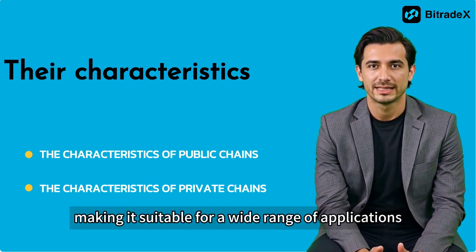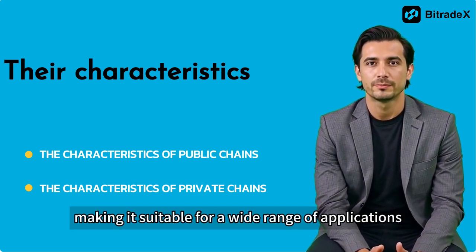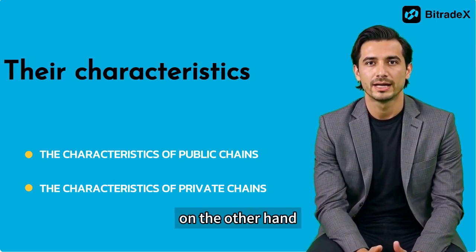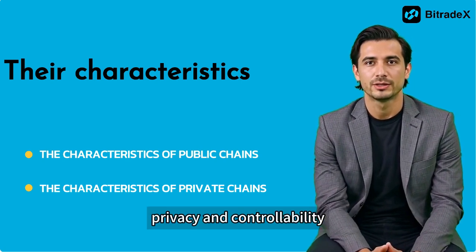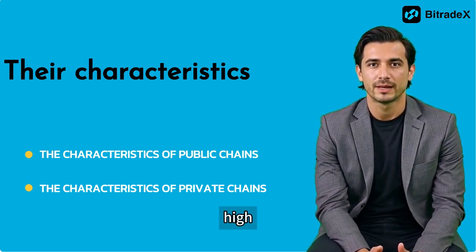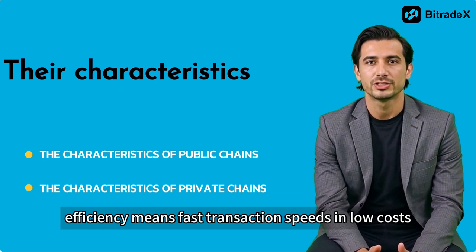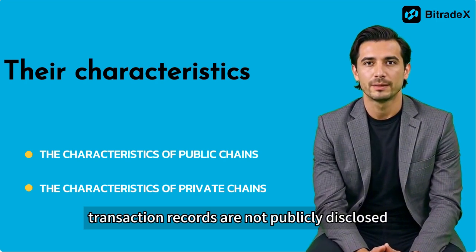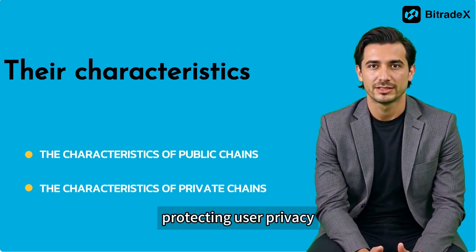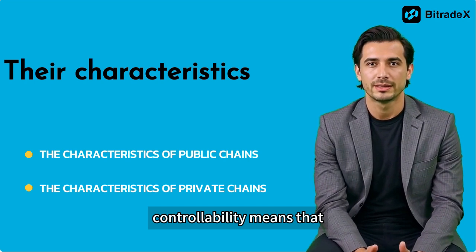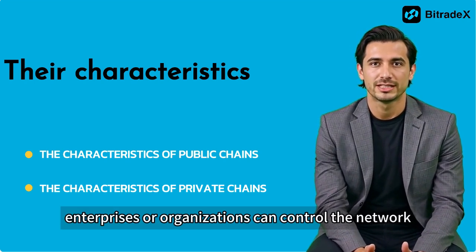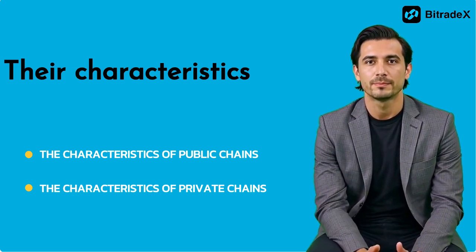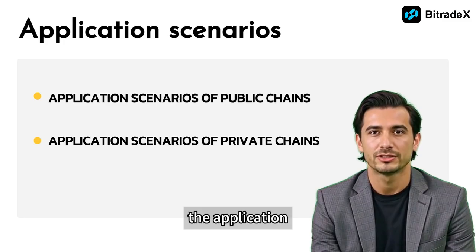Openness means that anyone can participate, making it suitable for a wide range of applications. The characteristics of a private blockchain include high efficiency, privacy, and controllability. High efficiency means fast transaction speeds and low costs. Privacy means that transaction records are not publicly disclosed, protecting user privacy. Controllability means that enterprises or organizations can control the network, making it ideal for internal applications.